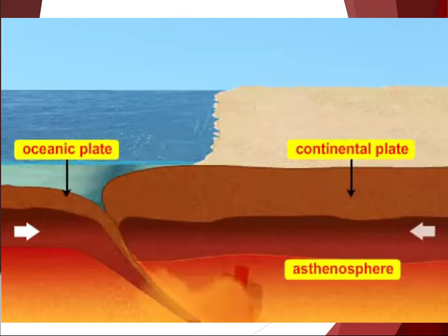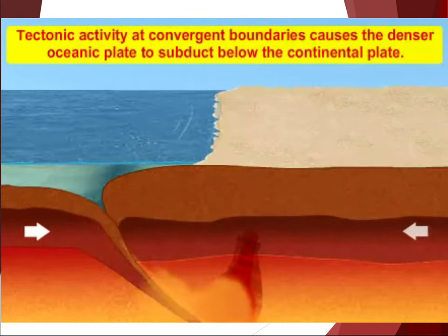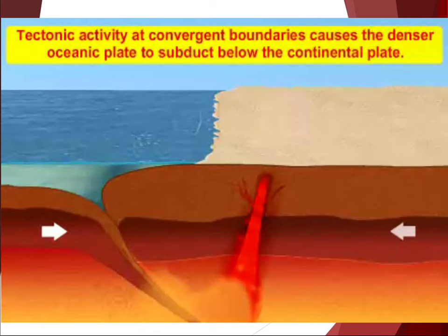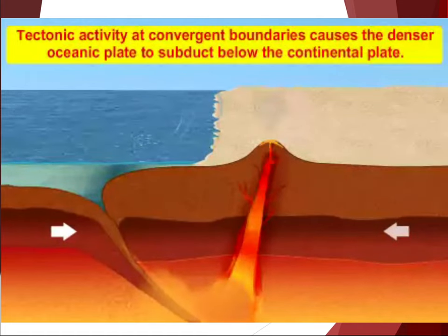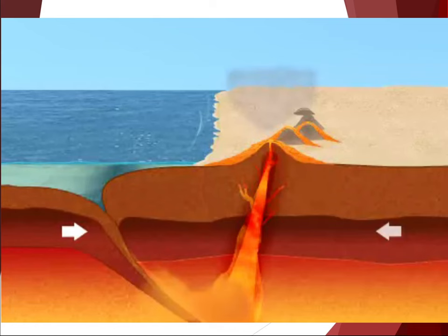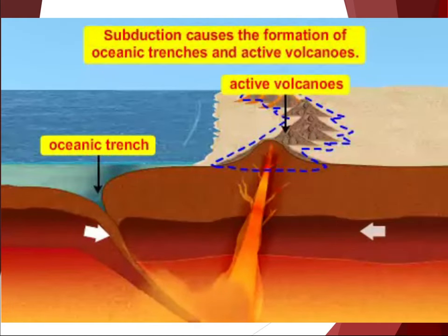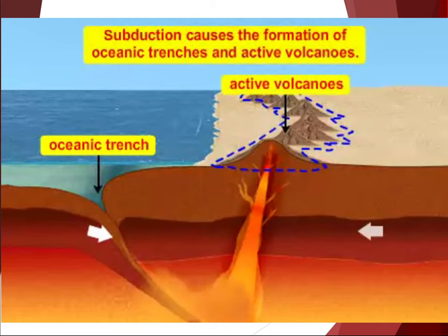In addition to erosion, many fossils are destroyed by the moving tectonic plates of Earth's crust, especially during subduction. When a plate containing fossils in the rock is subducted beneath another plate, the parts of that crust that contain fossils are pushed deep into Earth's interior where they melt, thereby destroying the fossil record.